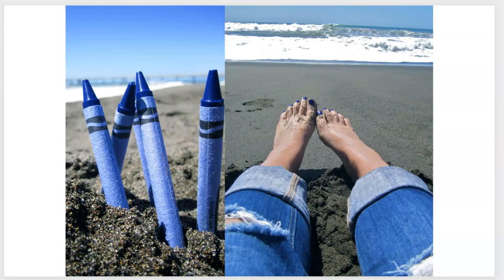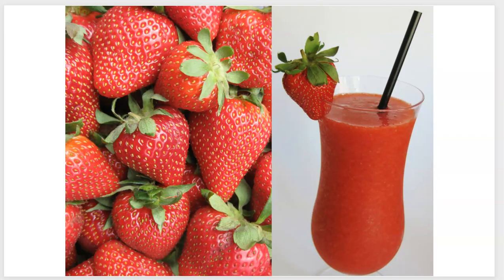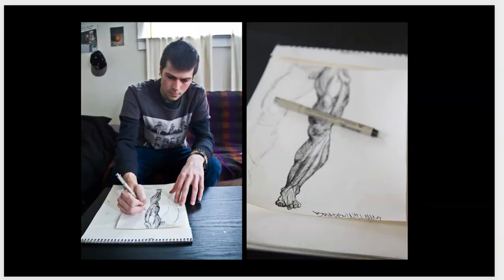This is also about color — crayons stuck in the sand, and then a photograph of someone's toenails painted the same color. Strawberries make strawberry smoothies, so this could be about color or about process — you need the strawberries to make a strawberry smoothie. It just depends on what you want to explore. Here we've got the artist making the drawing and then a detail of the drawing — very straightforward.